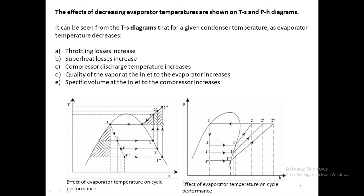The superheat loss also increases on the compressor side. Before, the compressor compressed from state 1 to the condenser pressure, but if we lower the evaporator pressure, it must go from a much lower pressure to a much higher pressure, reaching a much higher temperature. This extra heat must be rejected in the condenser environment. We supply the compressor extra energy to compress it, and then we waste that energy because we don't need this extra heat. The compressor discharge temperature therefore increases.